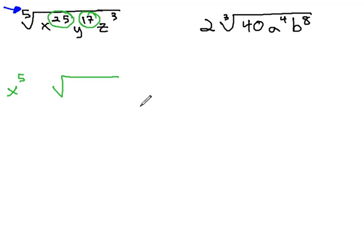For y to the 17th, 17 divided by 5 is 3 with a remainder of 2. That means 3 y's are outside, and the 2 remainders remain inside the radical.